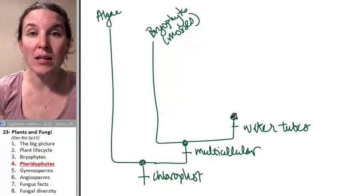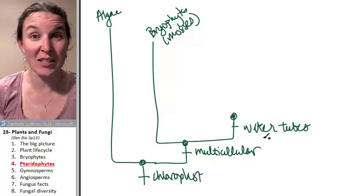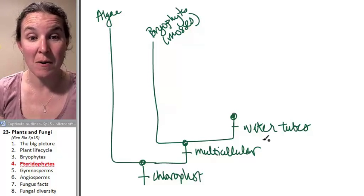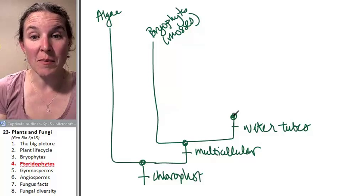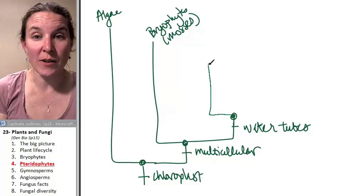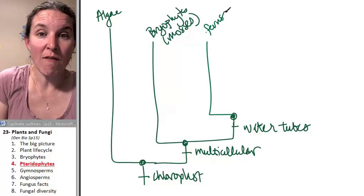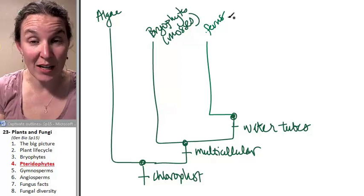A moss could never get that big because it could never carry water anywhere. Ferns are also known as pteridophytes.